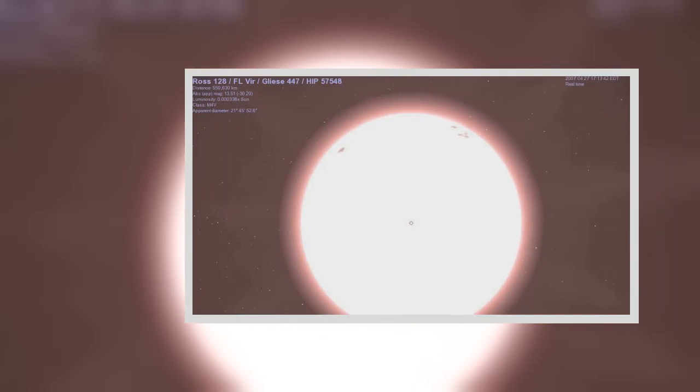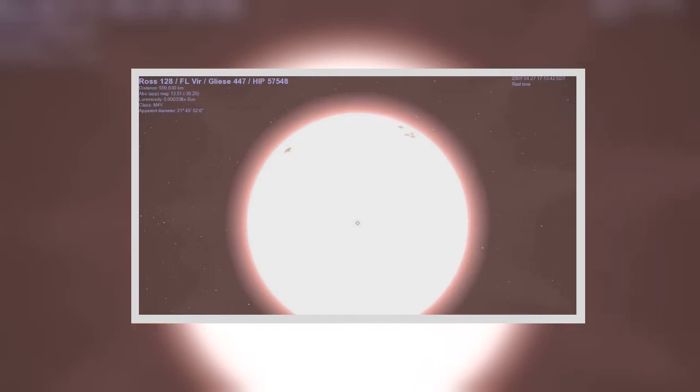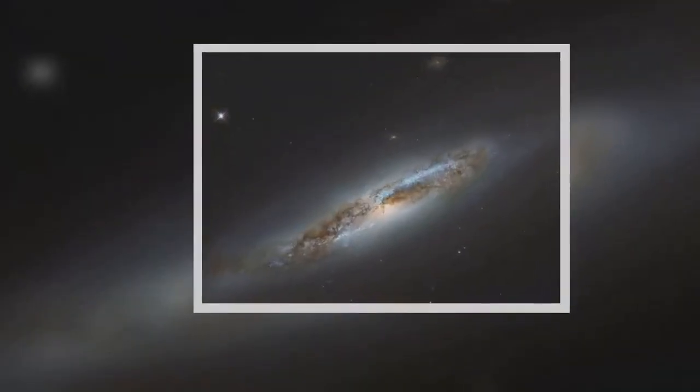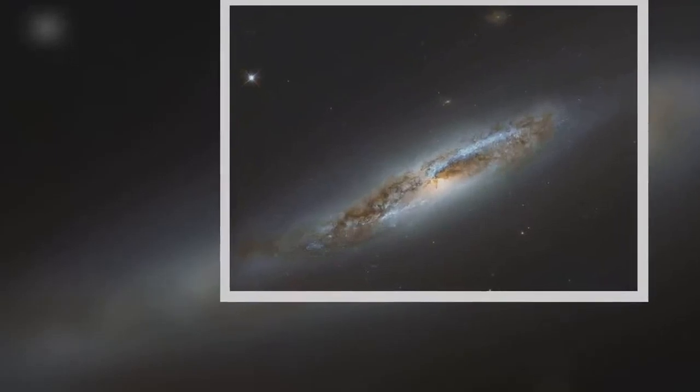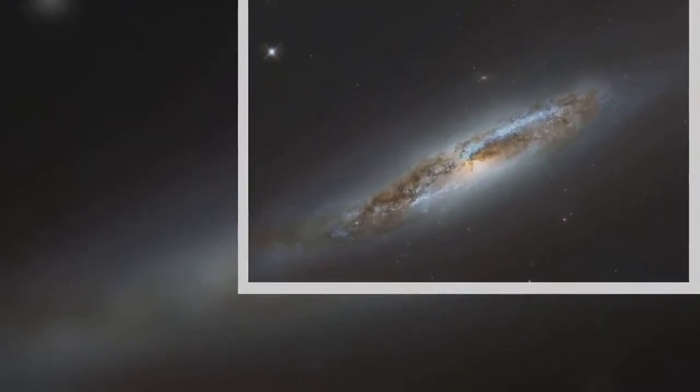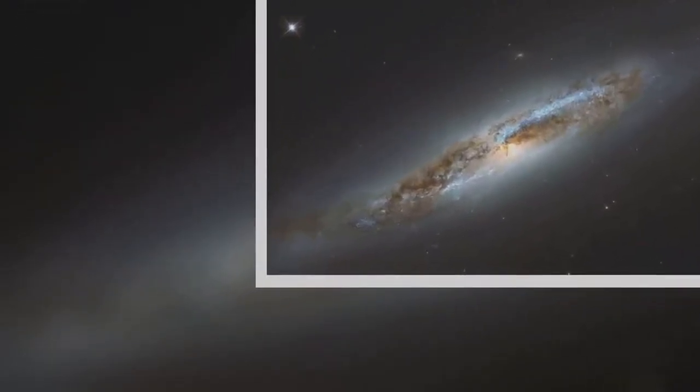Although currently 11 light-years from Earth, the new planet's parent star Ross 128 is moving towards us and is expected to overtake Proxima Centauri as our nearest stellar neighbor in just 79,000 years—a heartbeat on cosmic timescales.